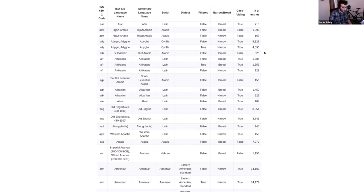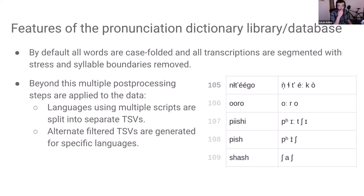We apply a few features by default to all languages. By default, all words are case-folded, and all transcriptions are segmented with stress and syllable boundaries removed. The TSVs generally look something like this. There are some languages that have more bespoke settings, but all languages have case folding, segmentation, and stress and syllable boundaries removed. Beyond this step, the data in the library diverges a little from what you get when running a regular scrape, as we have a couple of post-processing steps.